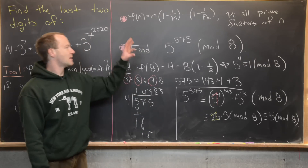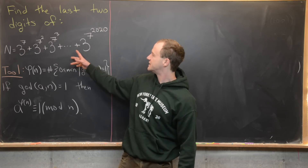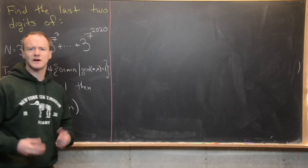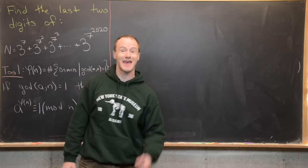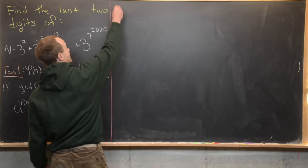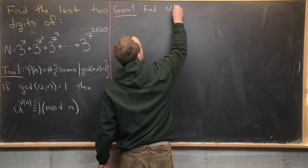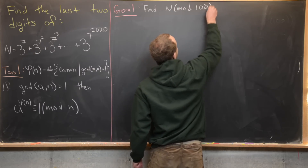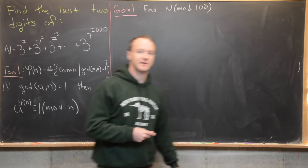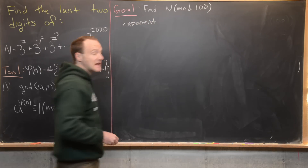Now that we've done the warm-up, let's move to our main goal: finding the last two digits of that sum of powers of 3. We can rephrase this as finding n mod 100, since the last two digits of any number are exactly the remainder after dividing by 100. By what we saw with Euler's generalization, the exponents can be calculated mod phi of 100, which should make things easier.